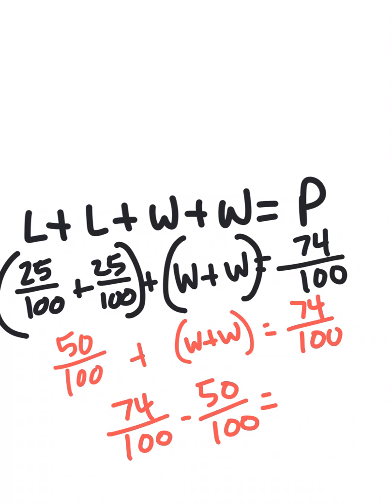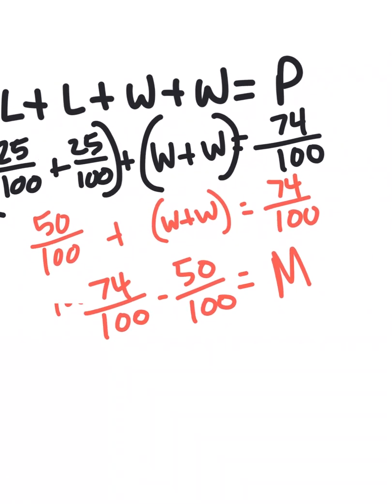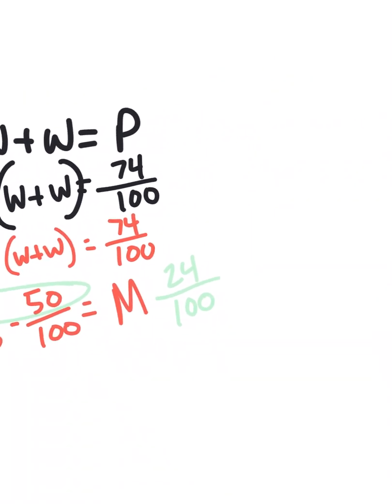I'm going to turn that around and make it a subtraction problem. 74 hundredths minus 50 hundredths leaves us with something. We'll call it M for missing width. When I'm subtracting fractions, if the denominators are the same, I'm really subtracting the numerators. So 74 minus 50 gives us 24 hundredths. Now we're not done yet, because 24 hundredths equals W plus W, or W times 2, because when I add two numbers together and those numbers are the same, it's like multiplying it times 2.